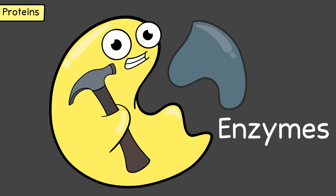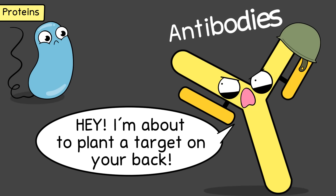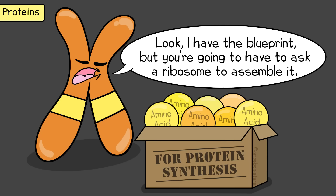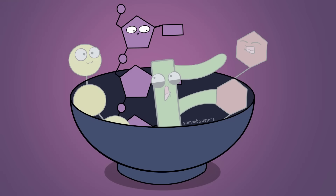Enzymes can build up or break down substances in all kinds of metabolic processes. Antibodies, which are made by immune cells in your body, are proteins involved in protecting your body. Some critical hormones, such as insulin, are proteins. And when we start talking about genes—genes are made of DNA, but many genes do code for proteins.